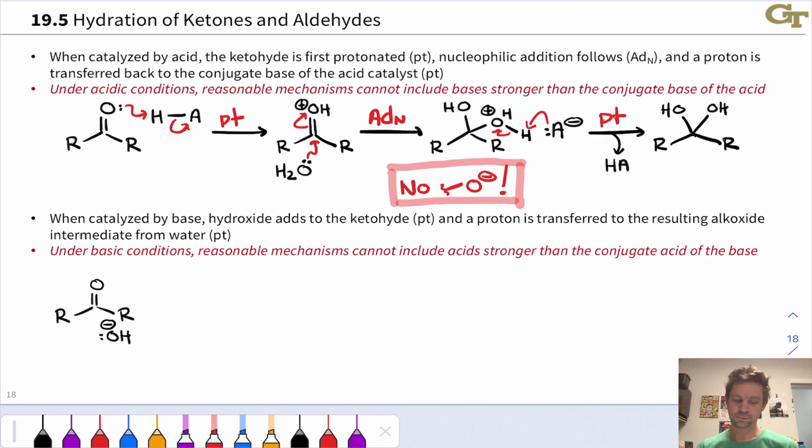Under basic conditions, the situation is now very different. Now the concentration of hydroxide is very high, and hydroxide is a good nucleophile that can add directly to the carbonyl carbon. But here again, under basic conditions, we have an important constraint on what we're allowed to draw. No cations.